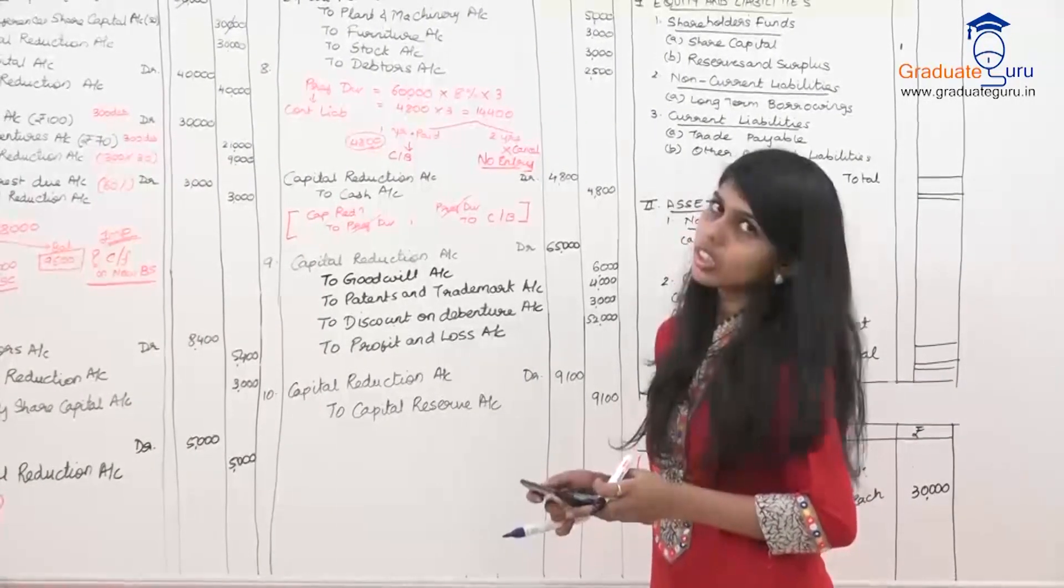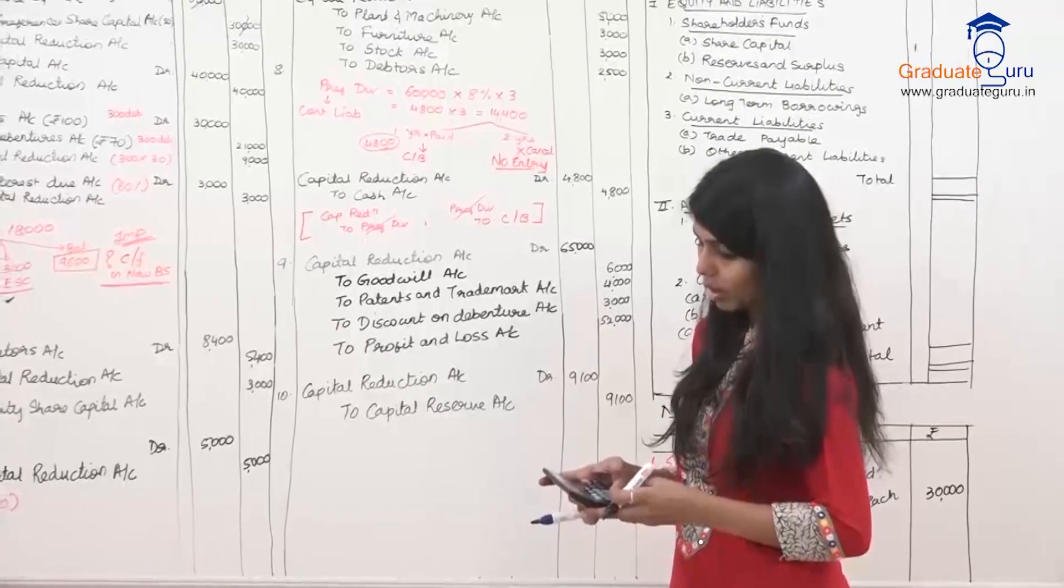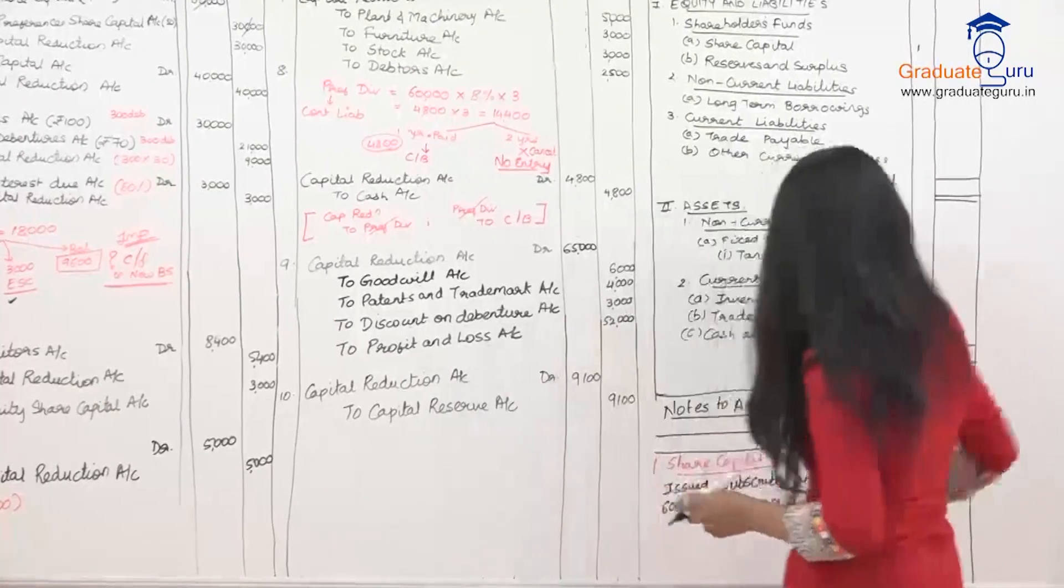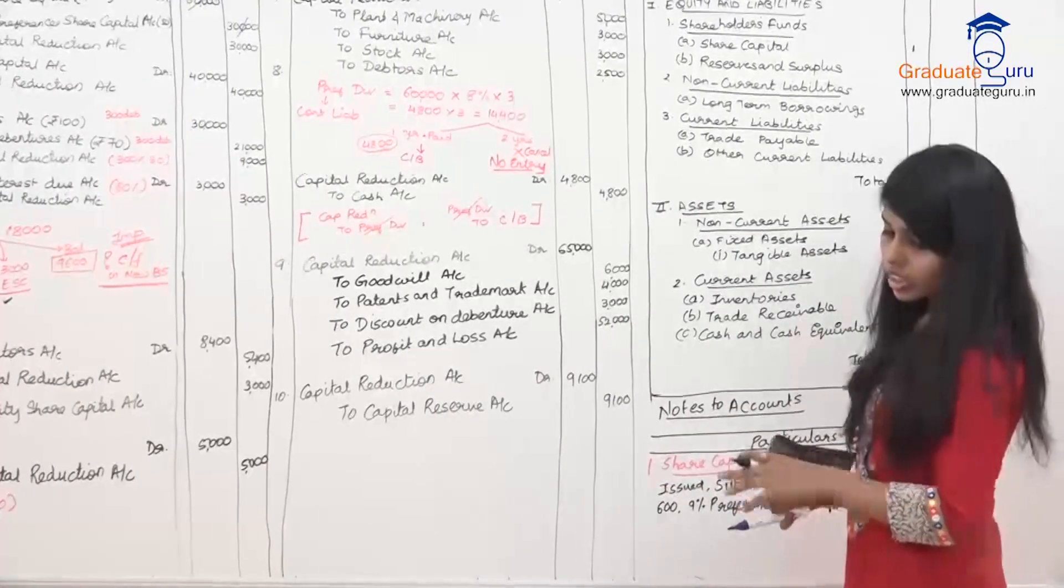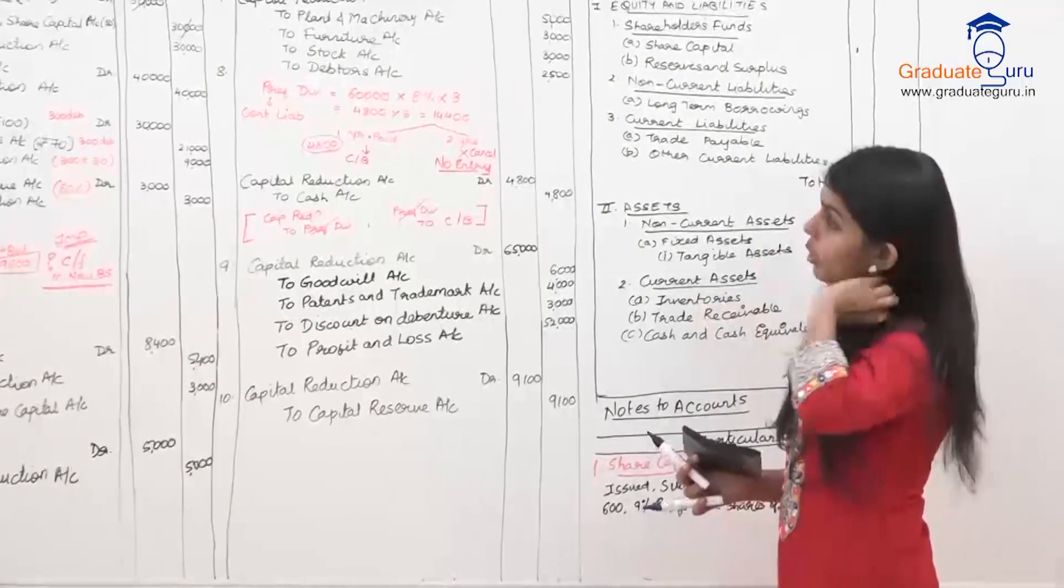How many shares of Rs. 100 each? So, 60,000. So that comes to 30,000. So, 600 shares of 30 each. This is the next.